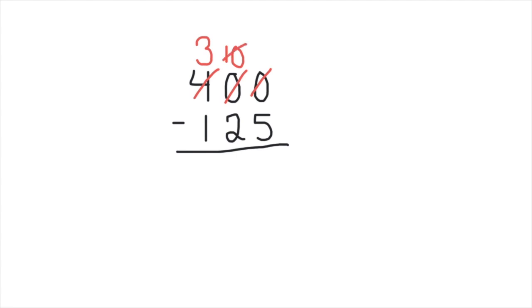Take one away, make it a 9, so that we can give 10 to our ones place. Now that we did all of that regrouping, we can subtract.